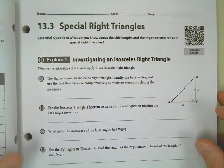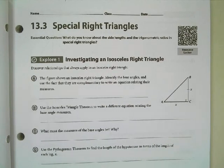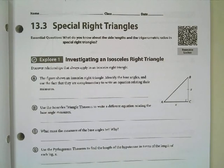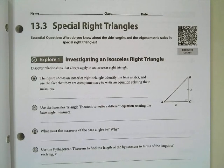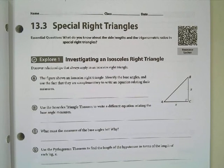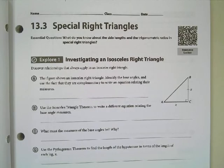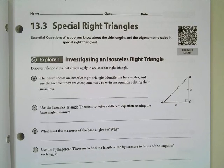Today we're going to continue looking at right triangles. This entire unit is basically a study of right triangles. We went from our last unit where it was mostly triangles — we talked about similarity of those — and now we're going to talk about right triangles. Specifically today, we're going to talk about special right triangles.